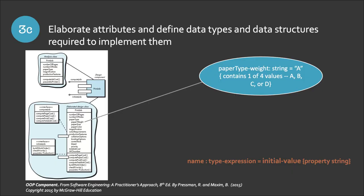Step 3C: we need to elaborate the attributes and define the data types and data structures required to implement them. During the first component-level design iteration, attributes are normally described only by names. Now we will elaborate the data types and data structures. In UML, an attribute's data type is defined using the following syntax: name, type expression, initial value, and property. For example, the attribute 'paper type' has name 'paper type', type expression 'string', and initial value 'A' — a selection of A, B, C, or D.